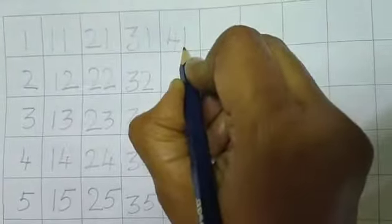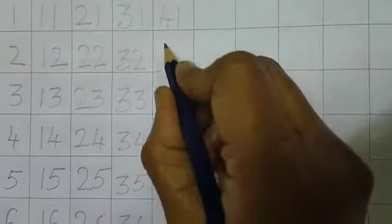After 40, 41. Say loudly and write children. And write neatly. Big, big numbers. 41, 42. 4, 3, 43. 4, 4, 44. 4, 5, 45. 4, 6, 46. 4, 7, 47. 4, 8, 48. 4, 9, 49. 5, 0, 50.